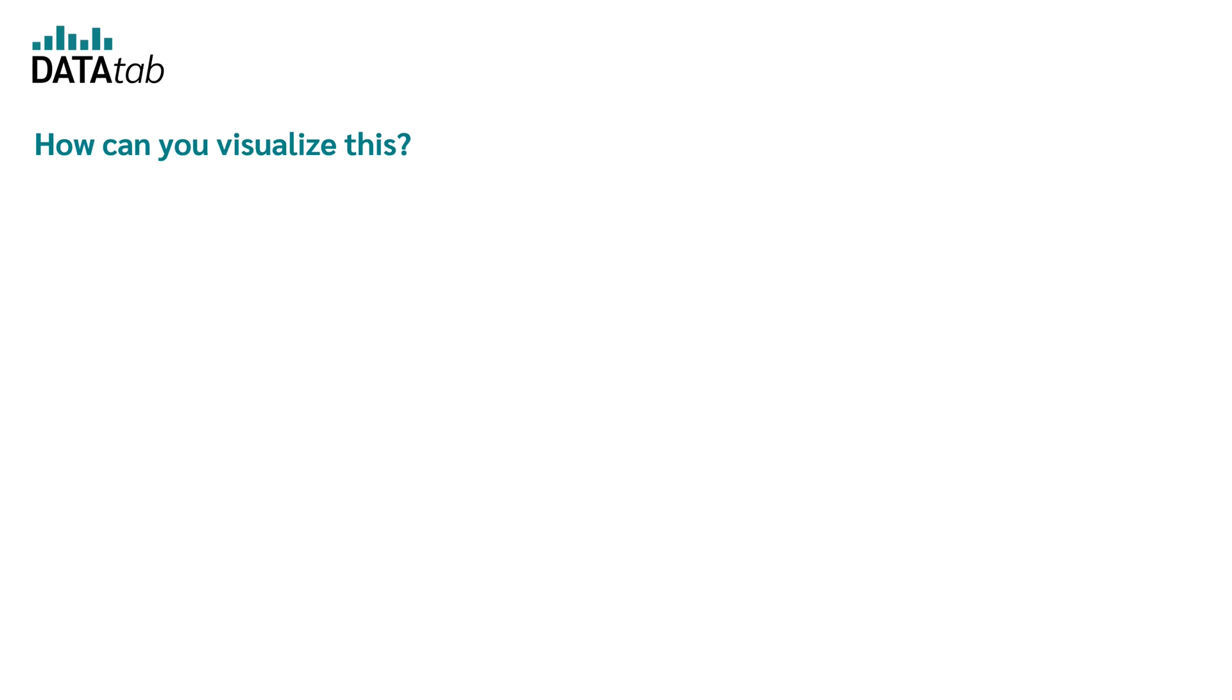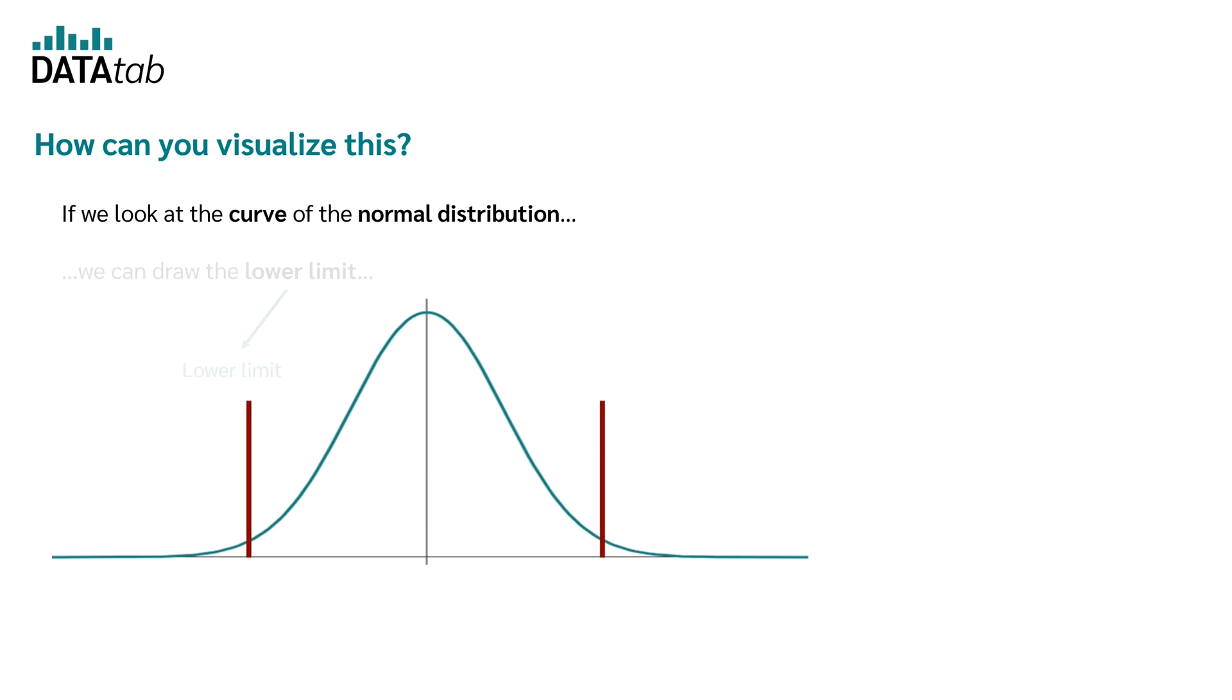How can we visualize this? If we look at the curve of the normal distribution, we can draw the lower limit and the upper limit. The lower bound is given by x bar minus z times s divided by the root of n, where we take the minus for the lower bound.